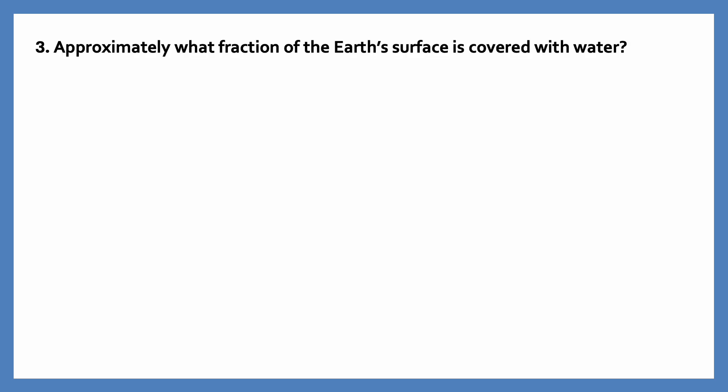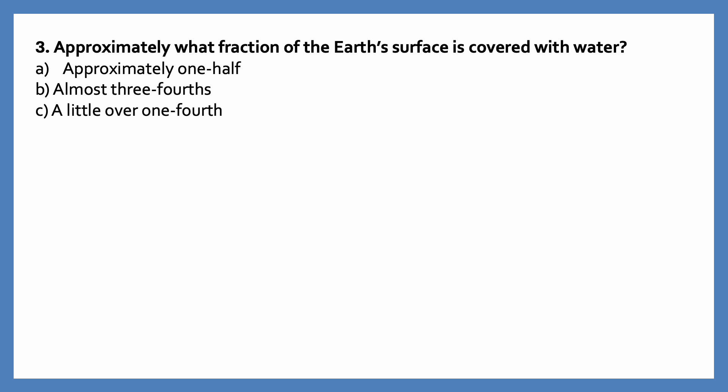Approximately what fraction of the earth's surface is covered with water? Options are approximately one half, almost three-fourth, a little over one-fourth, exactly half. The correct answer is almost three-fourth. Almost three-fourth of the earth's surface is covered with water.